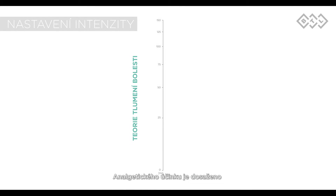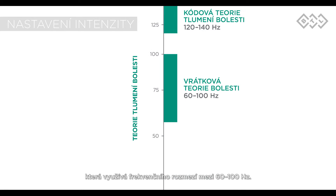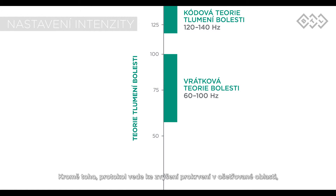To decrease pain associated with a slipped disc, the superinductive system works through the gate control mechanism of pain reduction, which is triggered in the 60 to 100 hertz frequency range. Furthermore, the protocol causes higher blood profusion of the exposed region, which leads to increased circulation and trophic improvement.